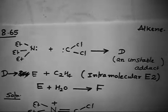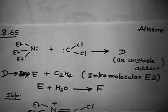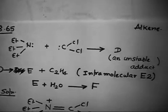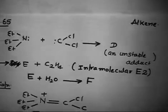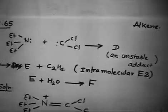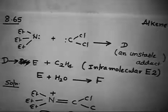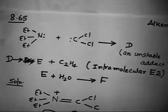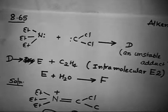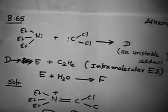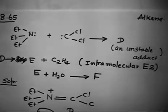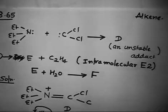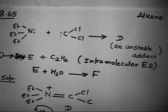Okay, let us discuss this problem. You copy this one and we'll discuss the solution part. Are you able to see? You have triethylamine (Et3N), and if it reacts with CCl2 carbene, it forms an unstable adduct.